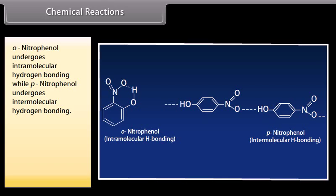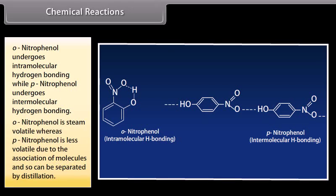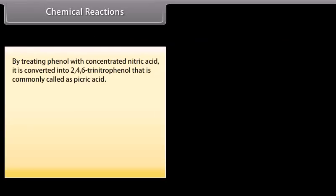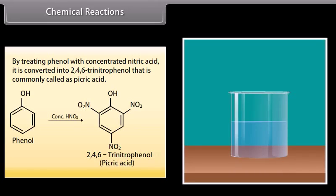Orthonitrophenol undergoes intramolecular hydrogen bonding, while paranitrophenol undergoes intermolecular hydrogen bonding. Orthonitrophenol is steam-volatile, whereas paranitrophenol is less volatile due to association of molecules, and so can be separated by distillation. By treating phenol with concentrated nitric acid, it is converted into 2,4,6-trinitrophenol, commonly called picric acid.